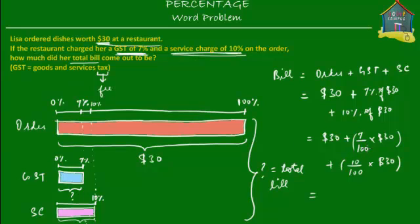Let's simplify the GST. The zeros cancel out, giving us 7 times 3 which is 21, and 21 divided by 10. Then let's simplify the service charge: cancelling the zeros in 10/100 times $30, all that's left is $3.